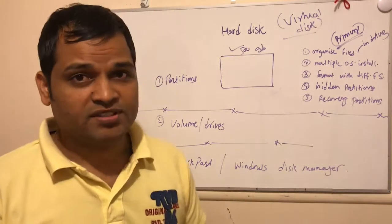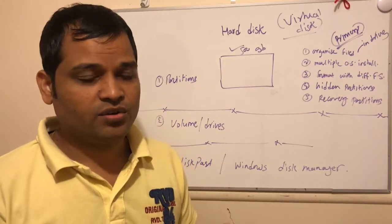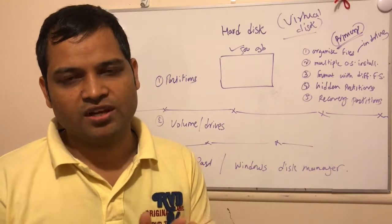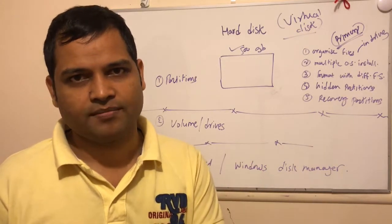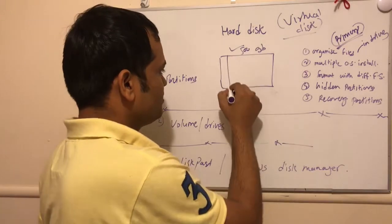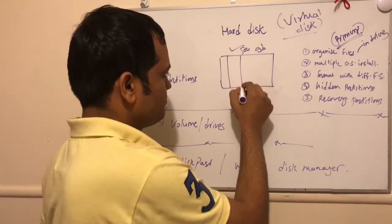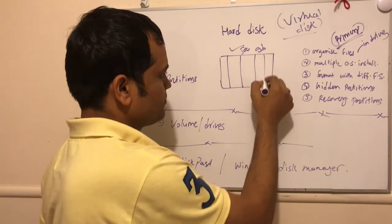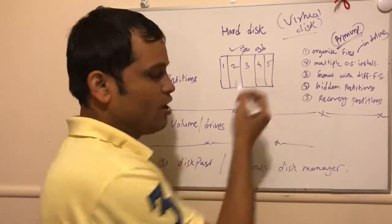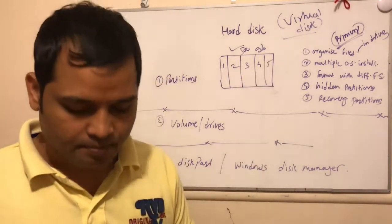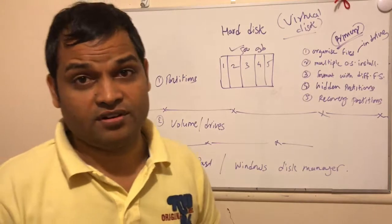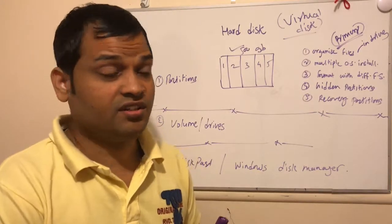Partitioning is basically dividing that particular hard disk into logical sections. Let us say we create partitions like one, two, three, four, and five — five partitions. Now, what is the benefit of partitioning the hard disk?